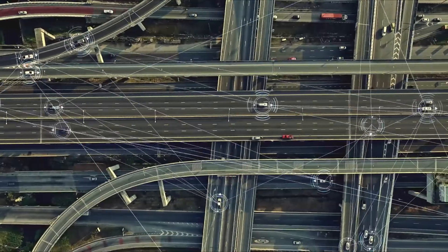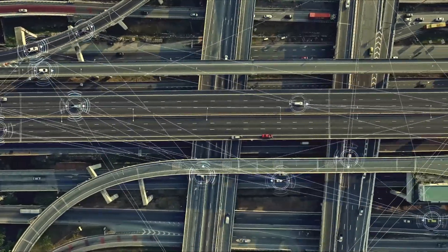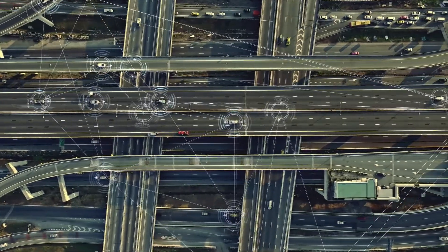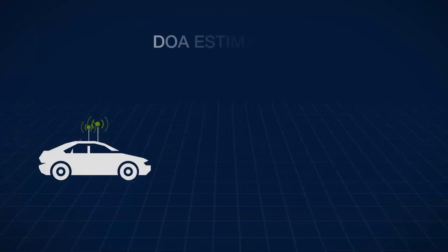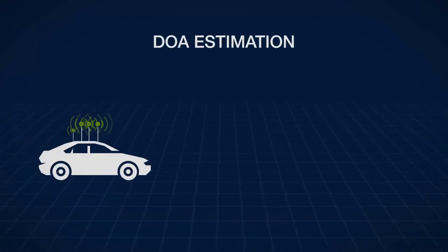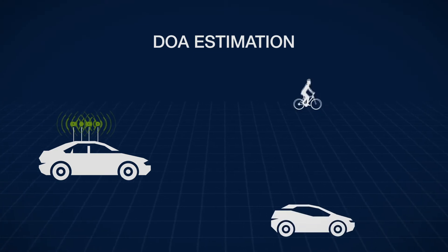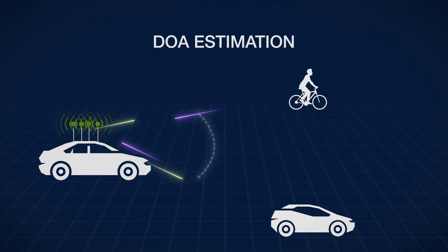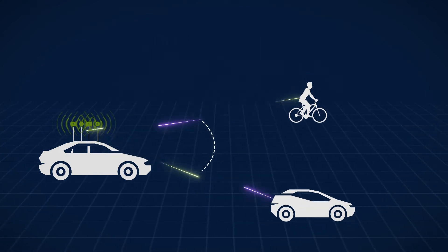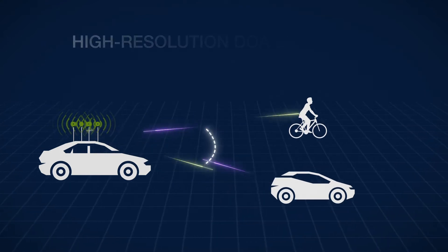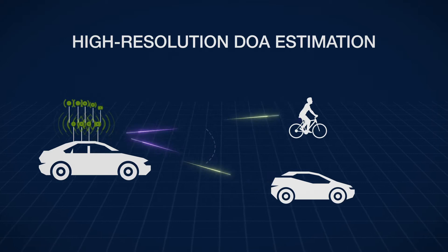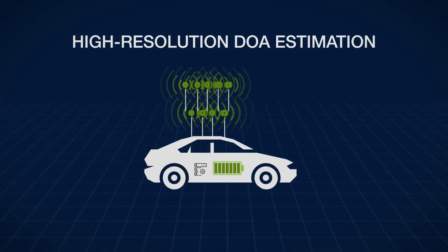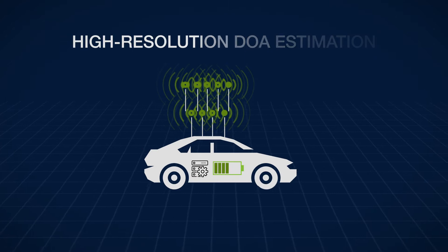In an autonomous driving system, it is critical to estimate the direction of arrival of objects around the system in order to assist self-driving and avoid collisions. These directions are estimated using an array of antennas. A high resolution direction of arrival estimation requires a large number of antennas, which causes hardware complexity and higher power requirements.